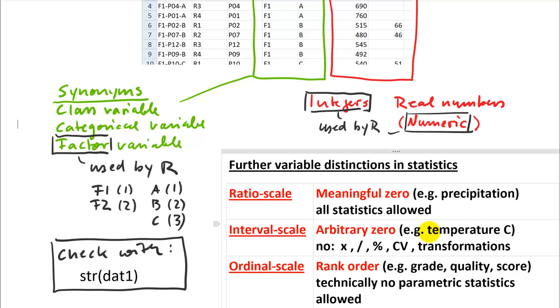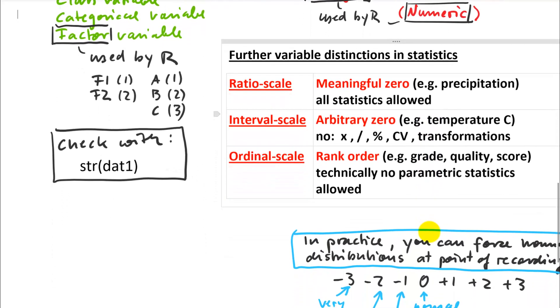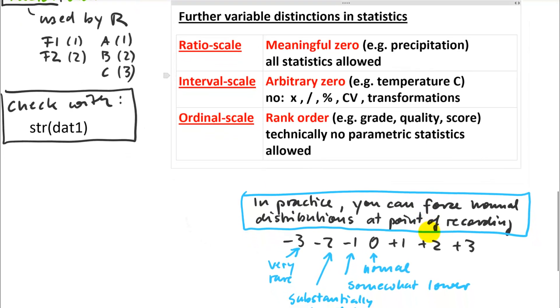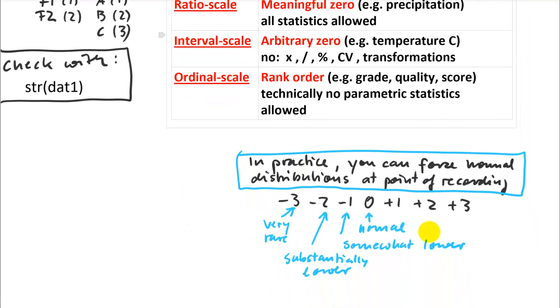Now, in the real world, you can actually ignore the theoretical statistician's objections and do parametric statistics just fine with those variables very successfully. And I give you a little bit of a tip on how to do this. So if you are in the field and you record a quality score, let's say you score trees in the genetic experiments for stem straightness or quality. Now, what you do for this is you look through maybe the first block of your plantation and you figure out what's a normal stem straightness or stem quality, what's a bit lower, what's a bit higher, what's substantially lower, what's substantially higher, and what's really exceptionally rare.